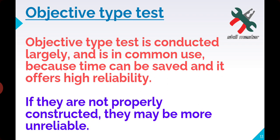If you have 50 questions and 3 hours — comparing subjective versus objective — 50 subjective questions in 3 hours would be very less time, whereas 50 objective questions in 3 hours is more comfortable. Objective tests offer high reliability because a student cannot guess the answer from just a small clue — definite knowledge is required to answer them correctly.